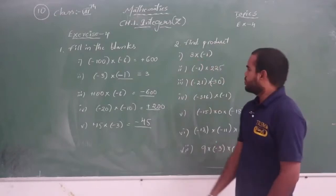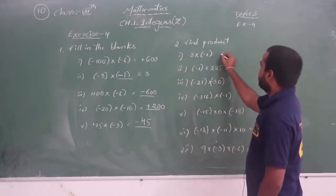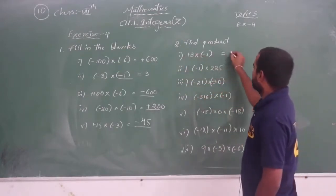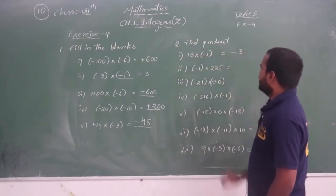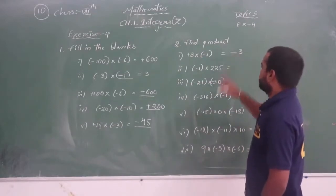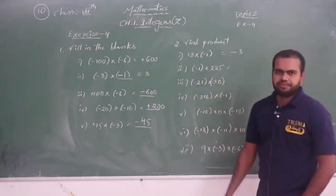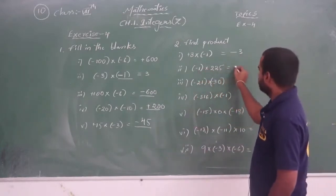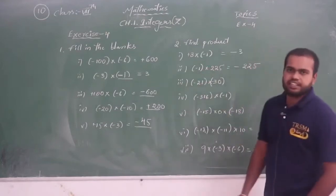See the first question: 3 into minus 1. No sign means plus, so plus into minus is nothing but minus. 3 ones are 3, so the answer is minus 3. Now see the second one: minus 1 into 225. Here minus into plus is minus. 1 into 225 gives the same 225, so the answer is minus 225.